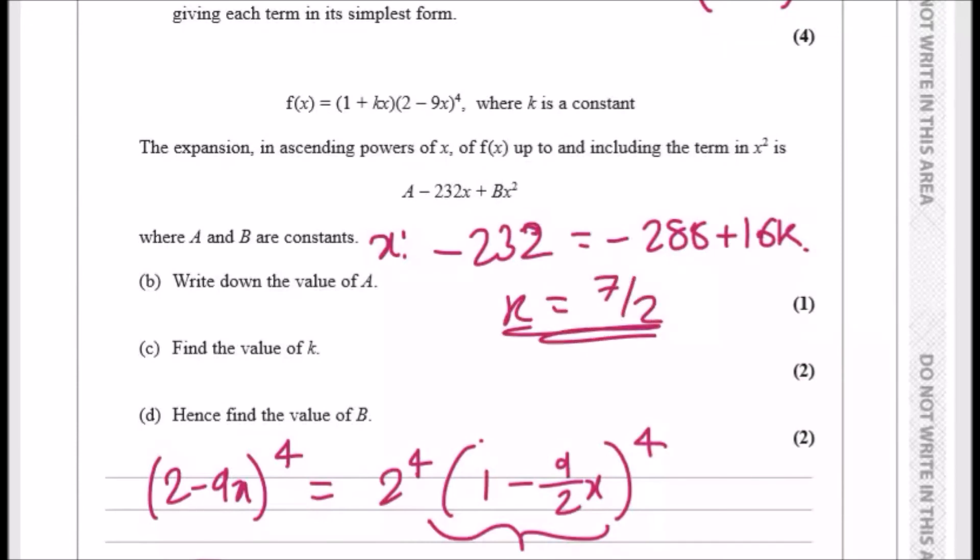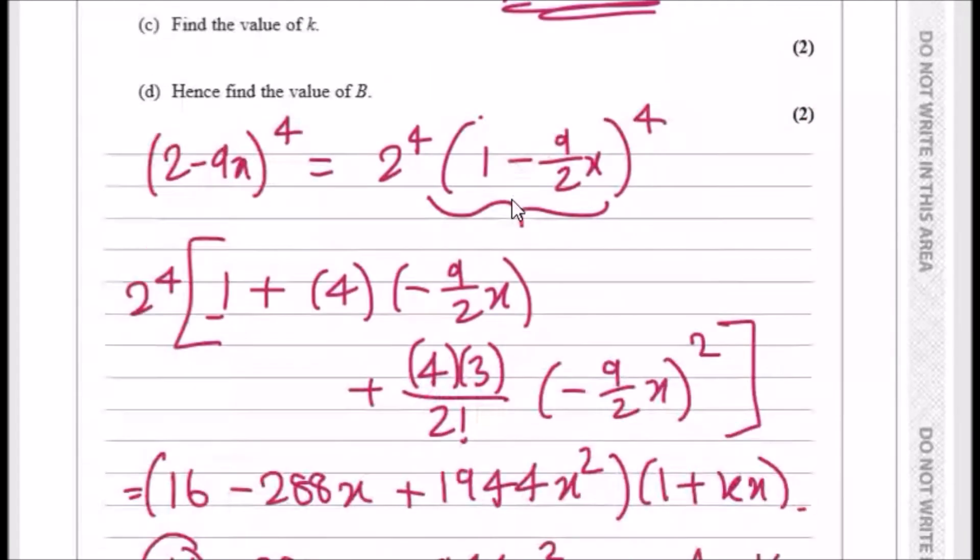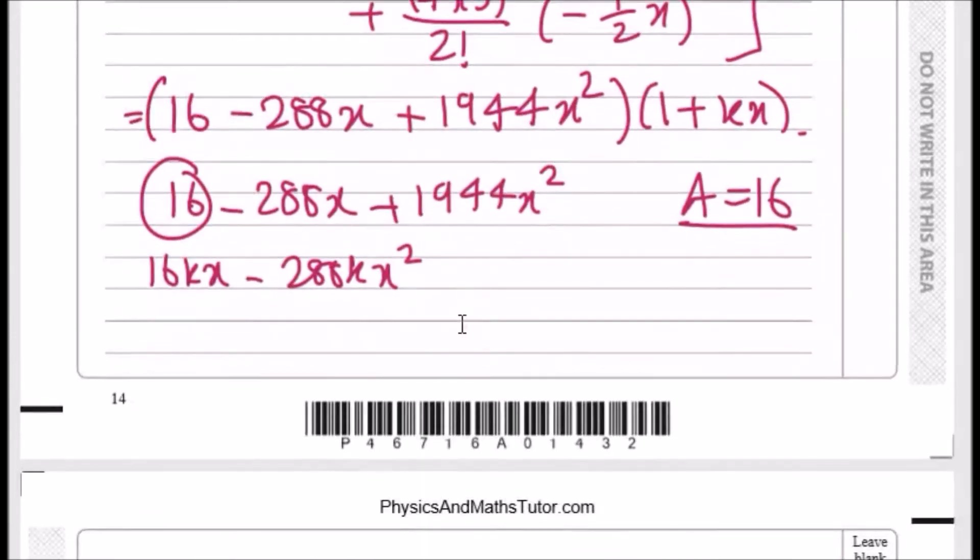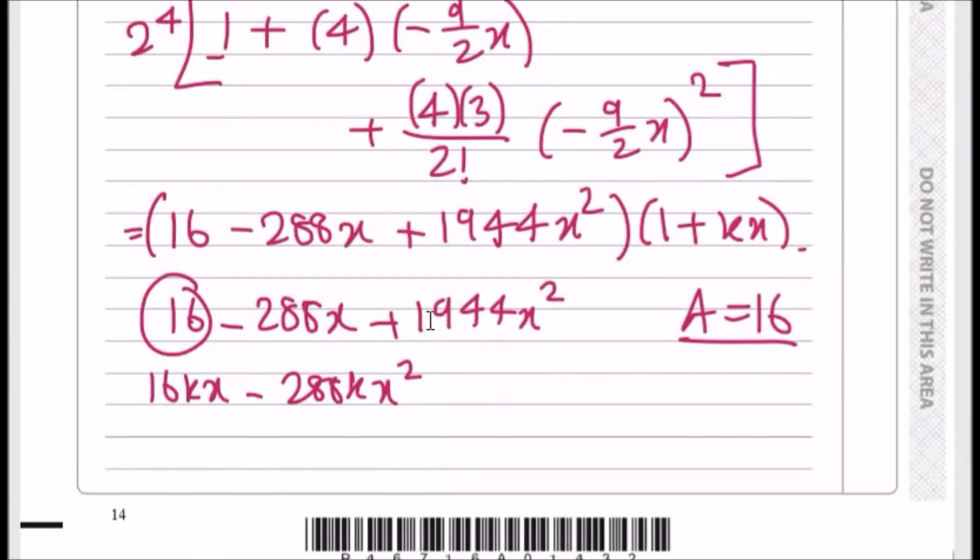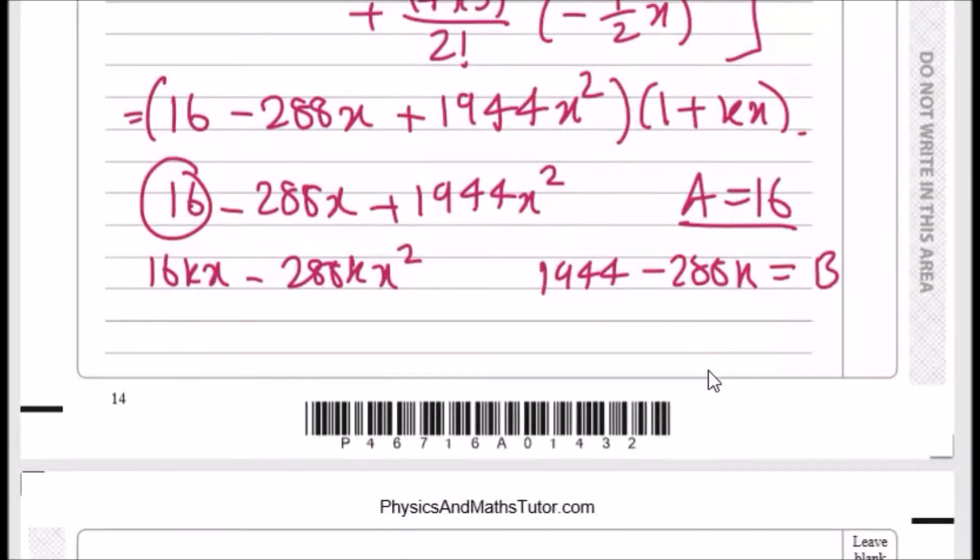And lastly, the final term. So for Bx squared, we have to make Bx squared equivalent to 1944x squared minus 288kx squared. So let's write it down here. So 1944 minus 288k must be equivalent to B, and this is easy. We know that the value of k is literally 7 over 2. Plug in 7 over 2 here and you should get 936. That's it, done.